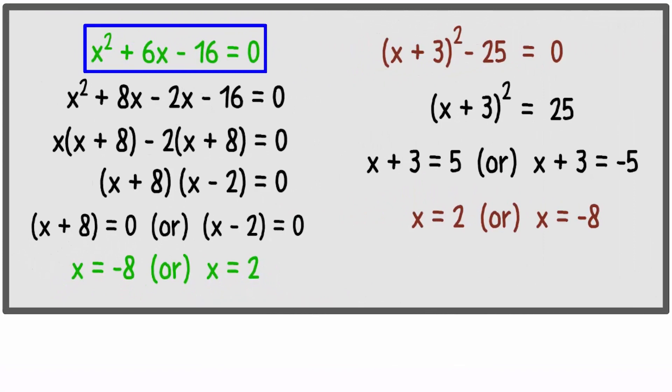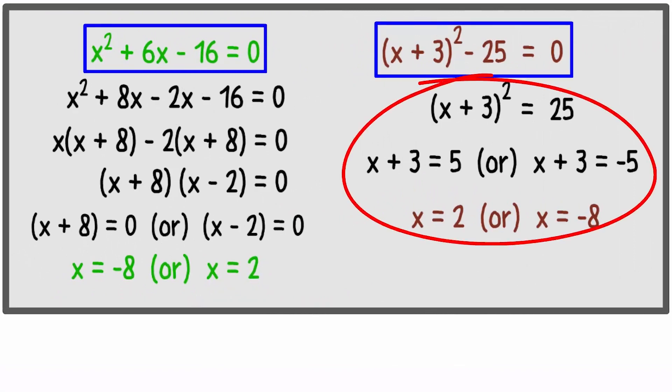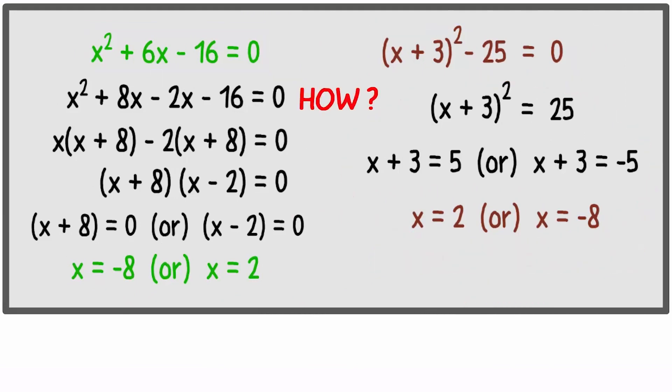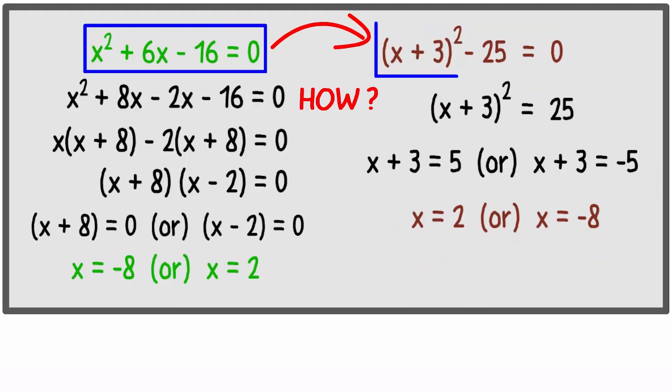Writing a quadratic equation in a specific form and then solving it is called the completing the square method. But the question is how? How can we write it in this form? Before we begin with this lesson, you need to know two identities really well.